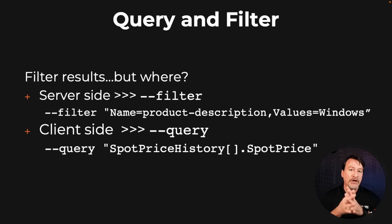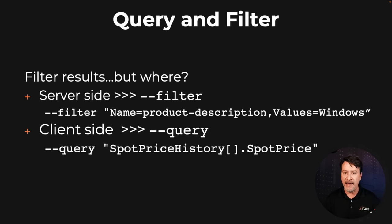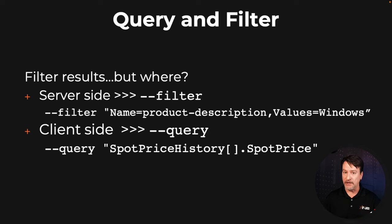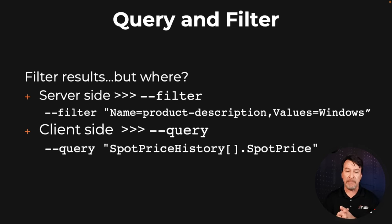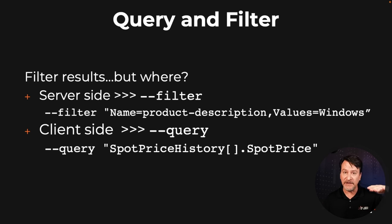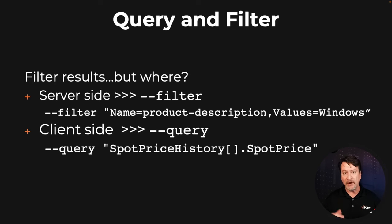And then we're going to do a spot-price-history spot-price query. What that'll do is, instead of seeing the availability zone, the product description, it'll just give us the spot price. Let's jump back over to the console, run these two, and see what we get. Okay, first we'll do the filter and bring it down to just Windows.